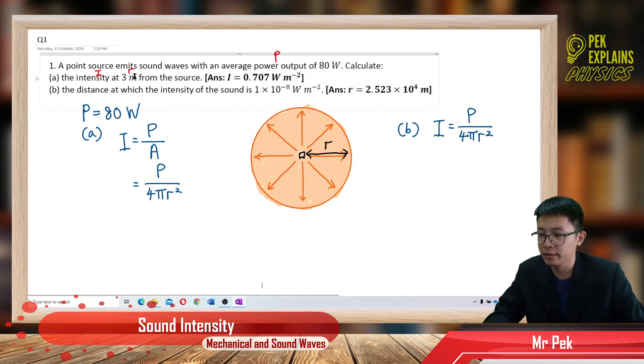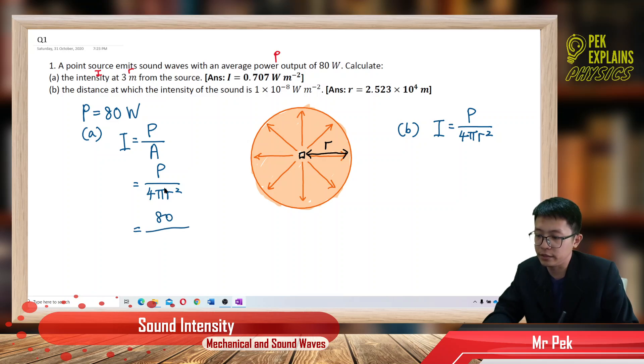Your distance R, 3 meters, is over here. So I can find the intensity easily. Power 80 W divided by 4πR. My R is 3 meters away. The further the distance, the lower the intensity actually.